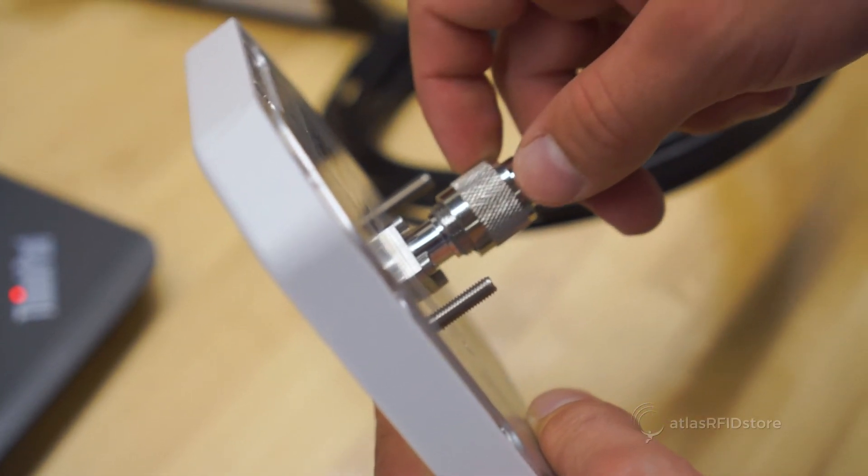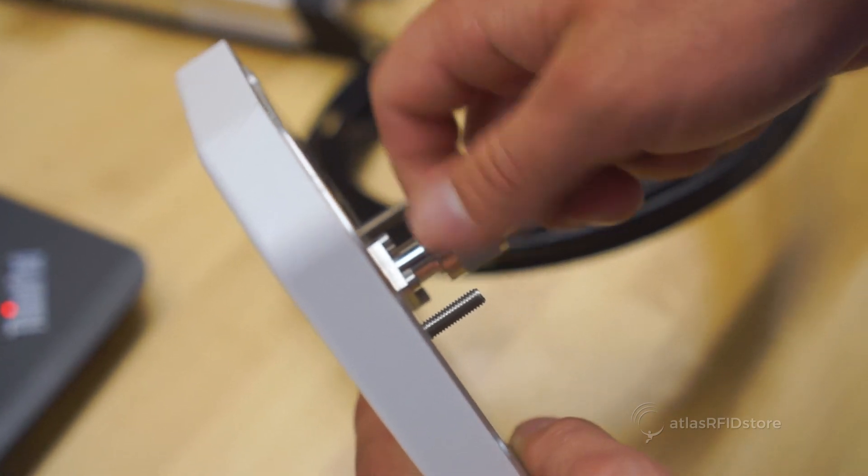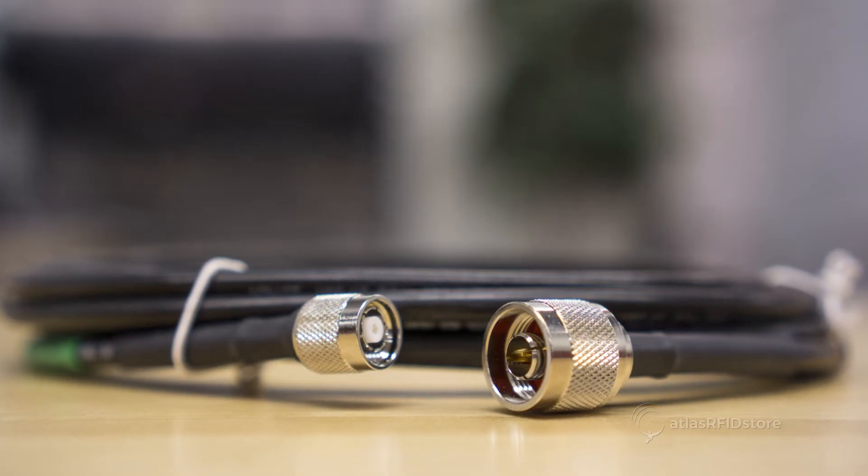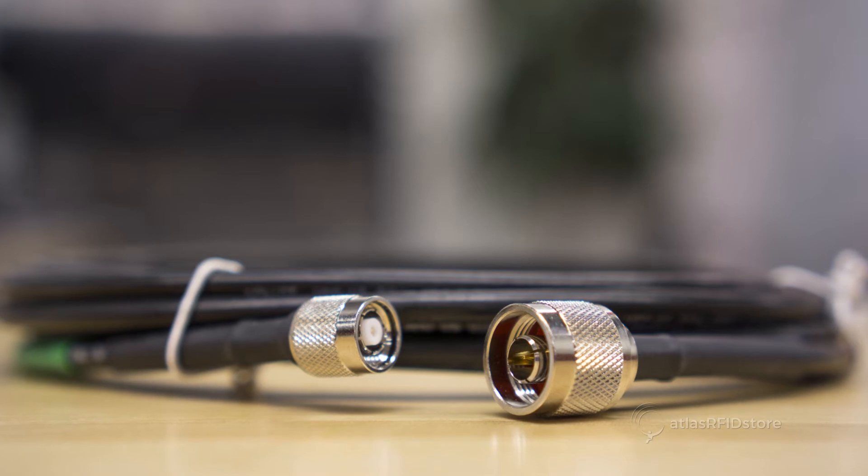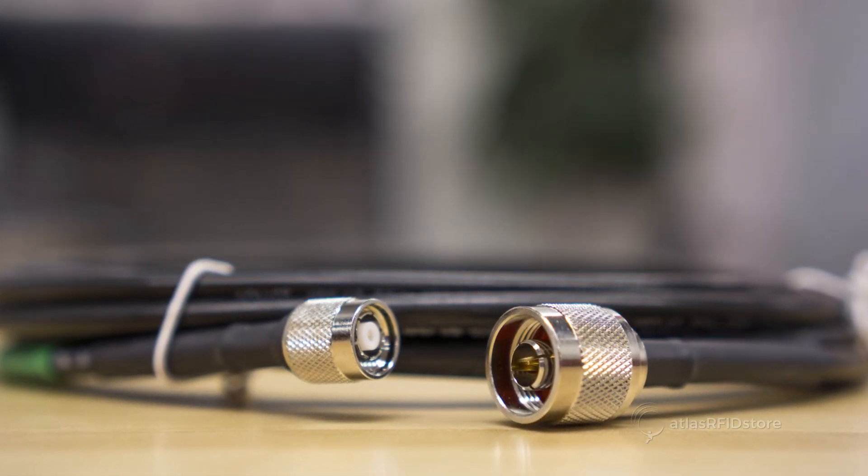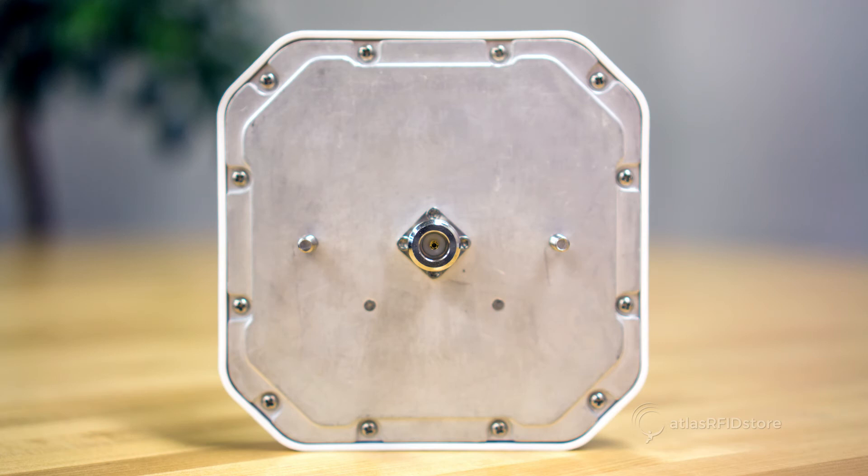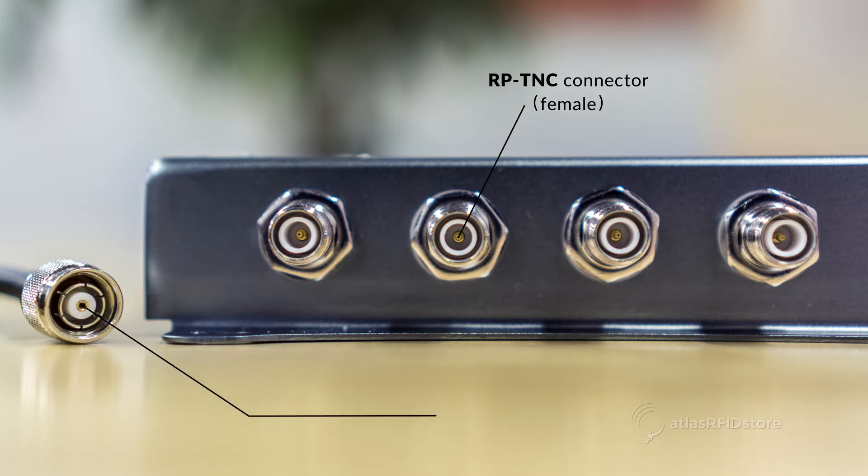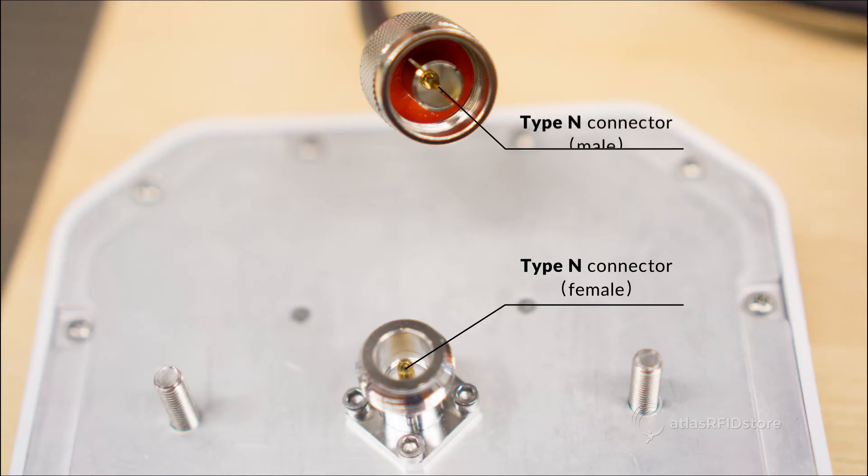The last thing that you will need to connect will be the RFID antenna. It is important that your antenna cable has the correct connectors for the reader and the antenna that you are using. For this example, I will be using an antenna with an N-type female connector. So my cable will need to have an RPTNC male connector to connect to the reader, and an N-type male connector to connect to the antenna.